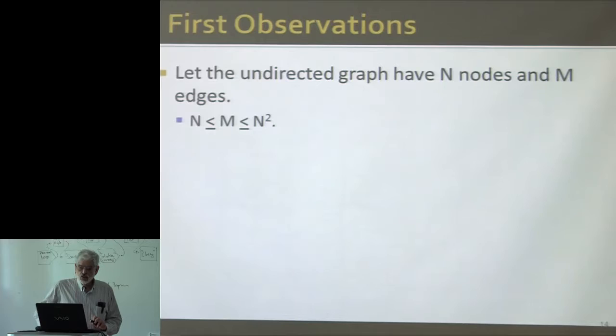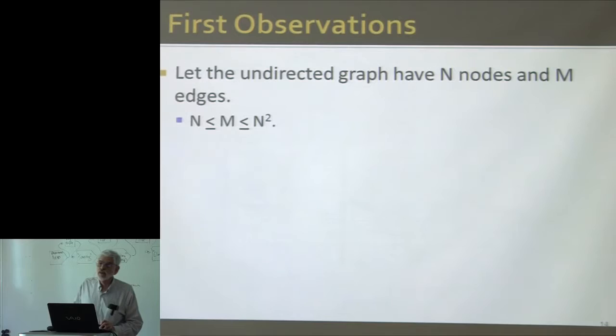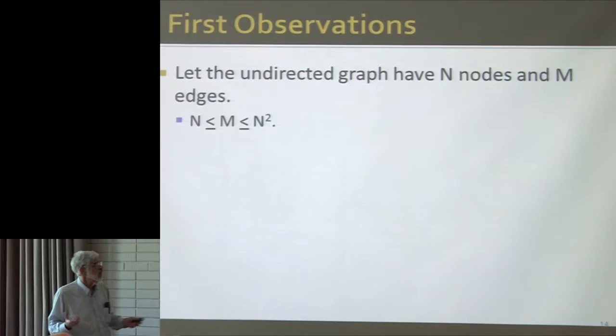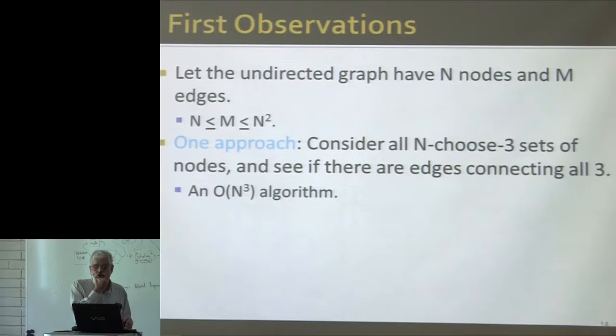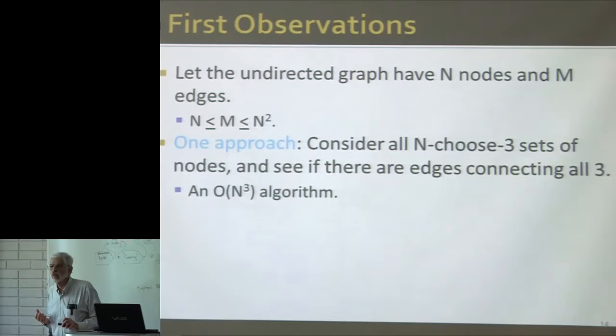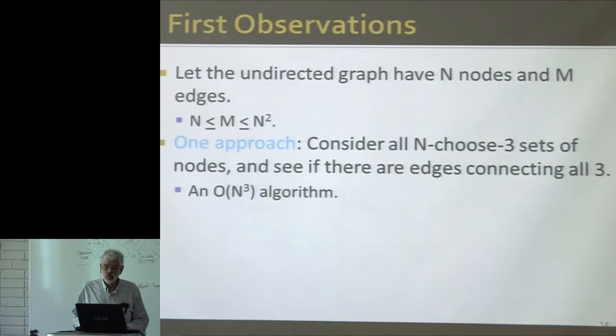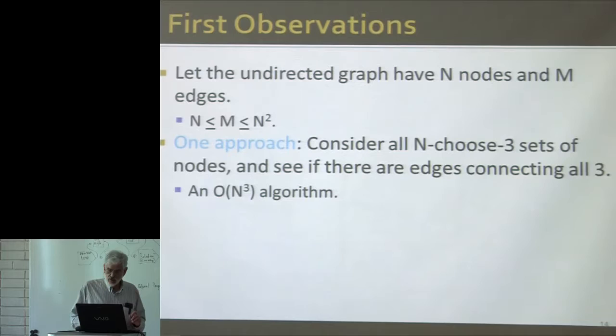I'm going to assume I have n nodes and m edges. M will be at least n and can't be more than half n squared. One thing I could do to count the triangles is go through all triples of nodes — that would be n cubed over six, because I just want sets of three nodes — and see if there are edges connecting them in all possible ways. That's an order n cubed algorithm.